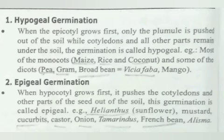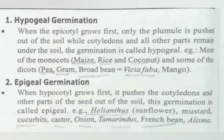Examples of epigeal germination include Helianthus (sunflower), mustard, cucurbit, castor, onion, tamarind, french bean, and alisma.